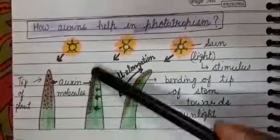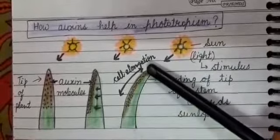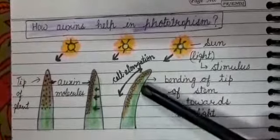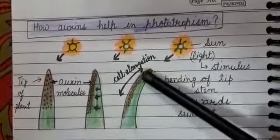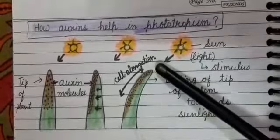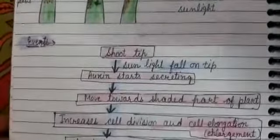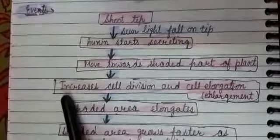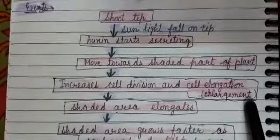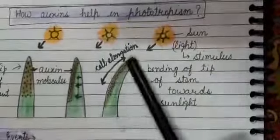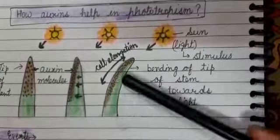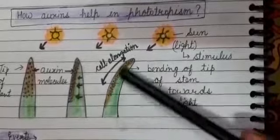Due to this, the shaded area elongates. The shaded area grows faster compared to the lighted area. So the shoot starts bending towards the light source. In summary: sunlight falls on the tip, auxins start secreting and move towards the shaded part, cell division and elongation increase in the shaded part, the shaded part elongates and grows faster, and the shoot bends towards the light source.